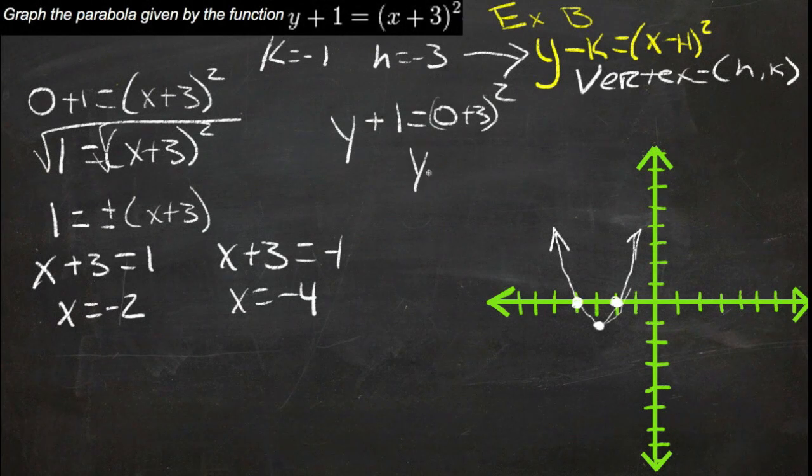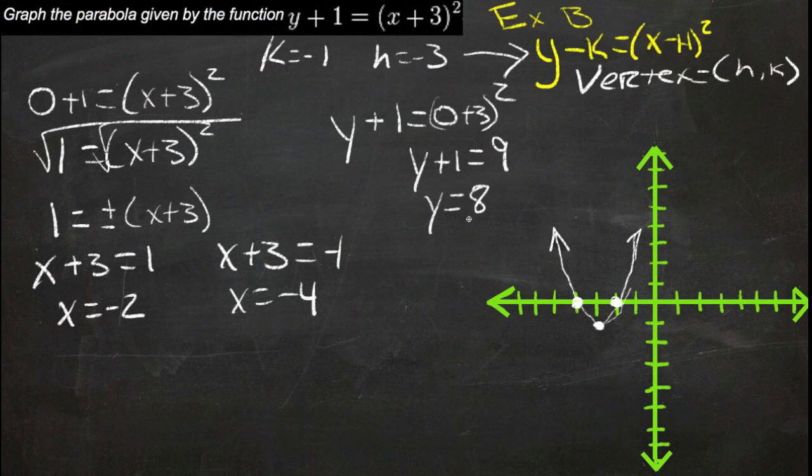We'd get y plus 1 equals 0 plus 3 squared, well 3 squared is 9, so we get y plus 1 equals 9, subtract 1 means we get y equals 8. So when x is 0, y is 8.